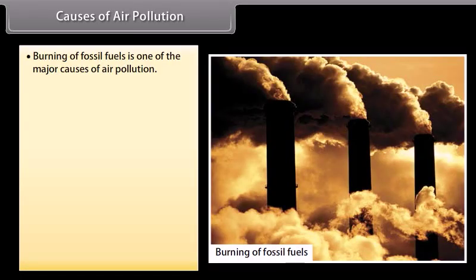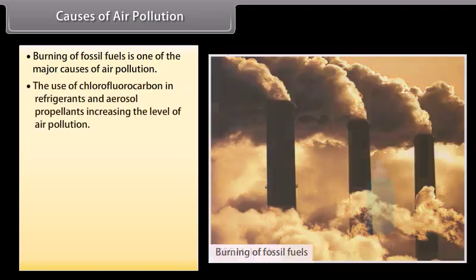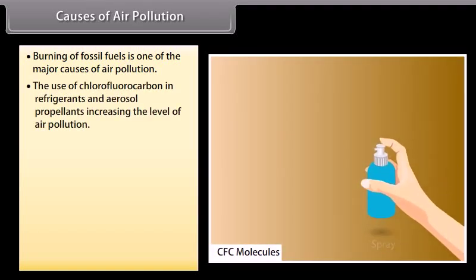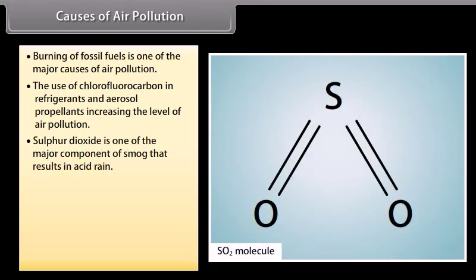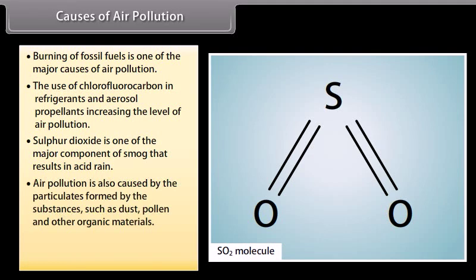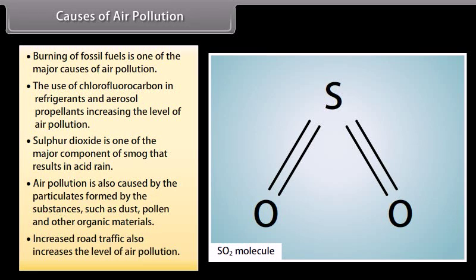Burning of fossil fuels is one of the major causes of air pollution. The use of chlorofluorocarbons in refrigerants and aerosol propellants increases the level of air pollution. Sulfur dioxide is one of the major components of smog that results in acid rain. Air pollution is also caused by particulates formed by substances such as dust, pollen, and other organic materials. Increased road traffic also increases the level of air pollution.